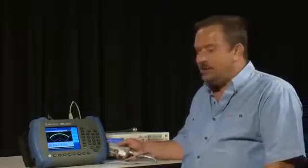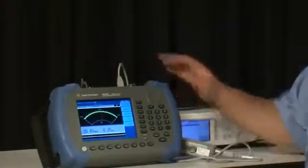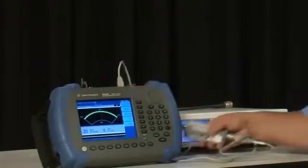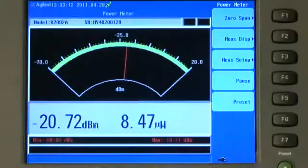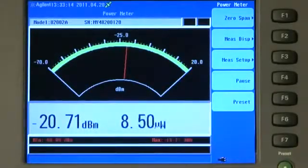a power meter is always going to make a far more accurate measurement than any spectrum analyzer can. So with our handheld spectrum analyzer and the U2000 sensor, we can make RF level measurements with ultimate accuracy.